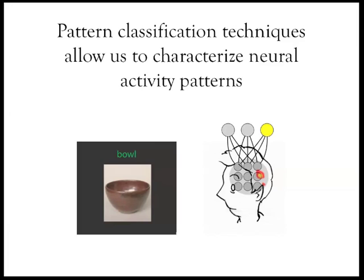At the end of the study period, the classifier had a number of examples of what neural activity from the three categories looked like, and it could use that to predict for any new pattern of brain activity whether that pattern corresponded to something from the celebrity category, landmark category, or object category.